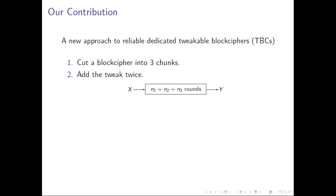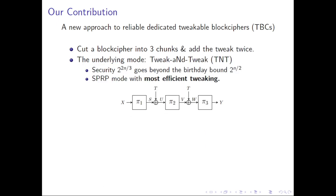We propose a new approach to reliable tweakable block ciphers. First, we cut a block cipher into three chunks, and then we add a tweak twice between these chunks. See this example. If we have a block cipher with n1 plus n2 plus n3 rounds, as in this picture, we will cut it into three chunks with n1 rounds, n2 rounds, and n3 rounds. So by this, here we have two gaps, and then we insert the tweak between the three chunks into the two gaps.